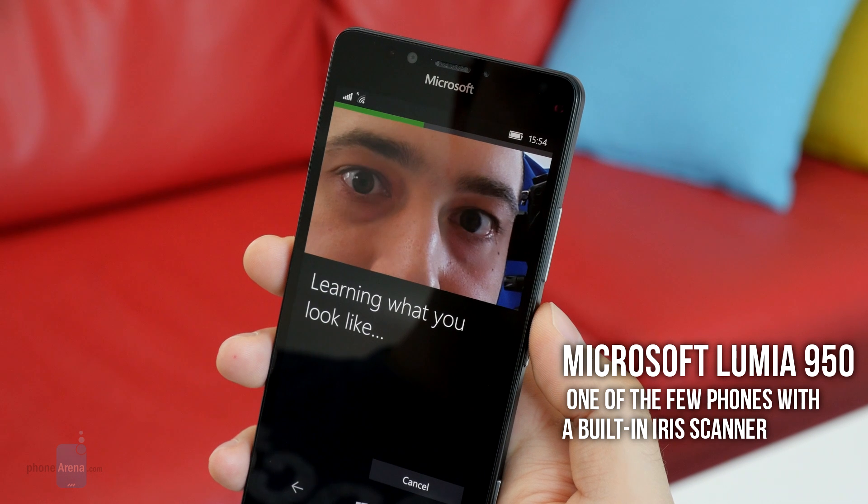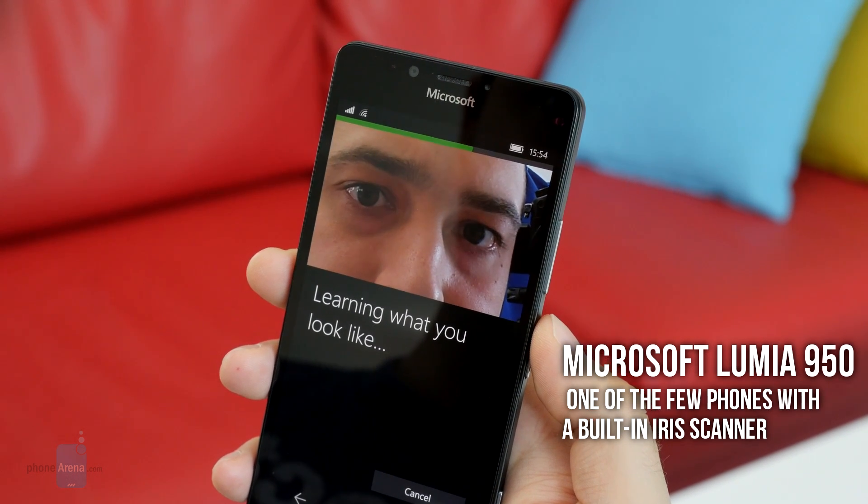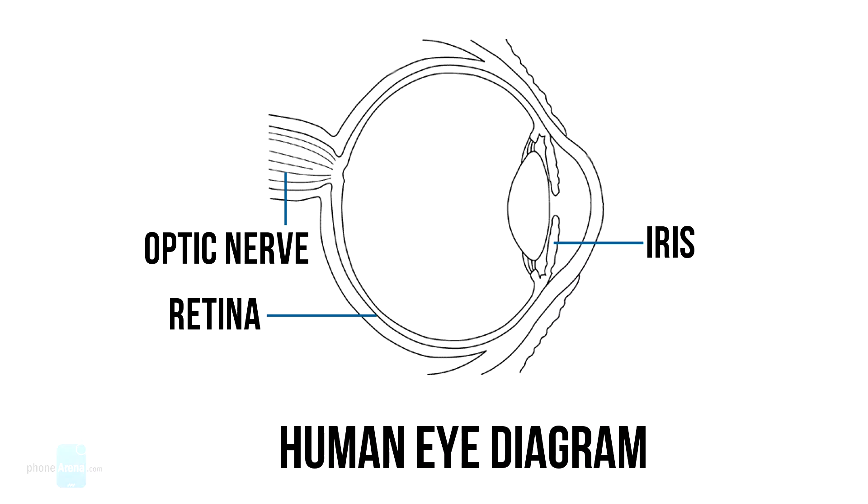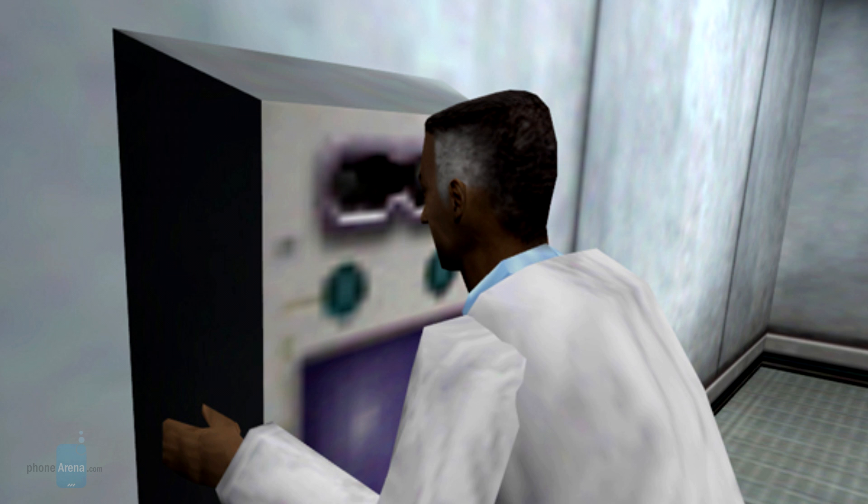First of all, we should clarify that iris scanners and retina scanners are two different things. A retina scanner scans the inside of your eye, which means the reading has to be performed from a really close distance. Just imagine how silly that would look on a smartphone.